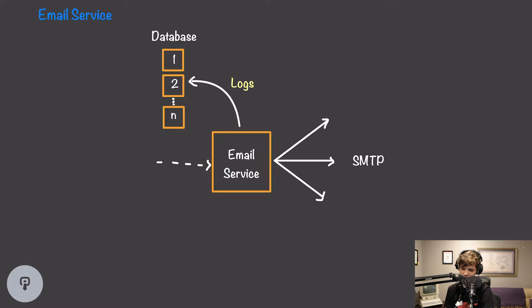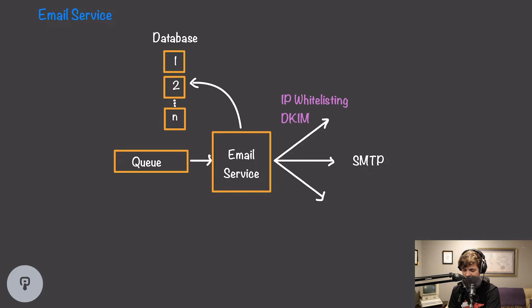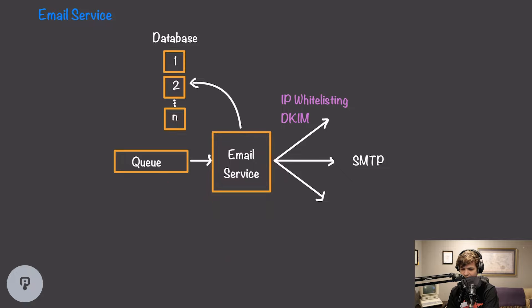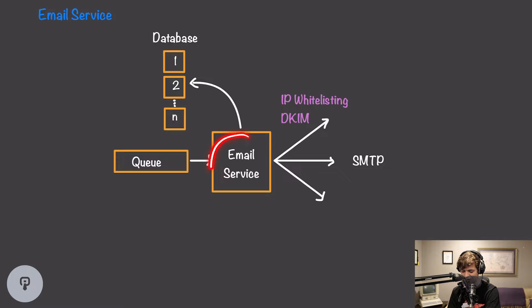A bare-bones email service is just a single server that takes in requests and sends an SMTP request to whichever server the email is destined for, then logs whether the email was sent and delivered to the database. Because we're sending a huge quantity of emails, we introduce a queue. This allows us to scale the email service with multiple copies all pulling from the queue. It also allows the service to run asynchronously — our flow and campaign execution services don't want to wait for each email to actually send. If a destination server is down, those messages wait in the queue and our email service sends them out when they're ready.